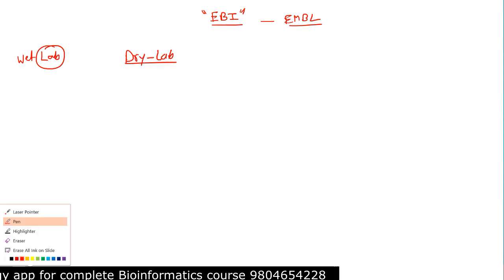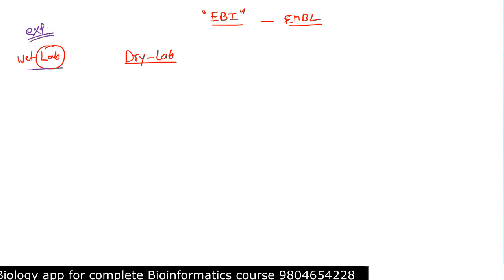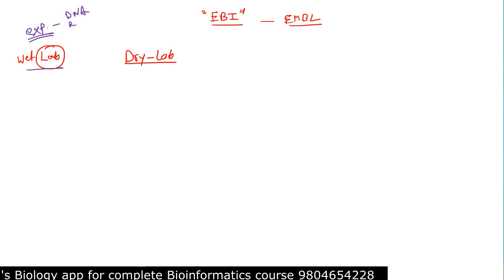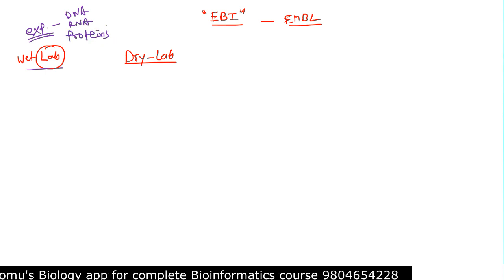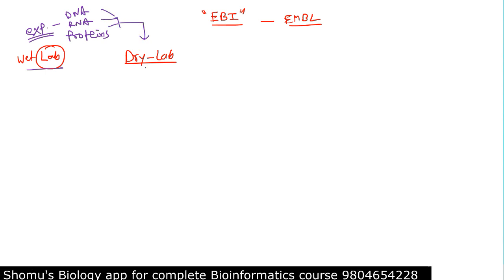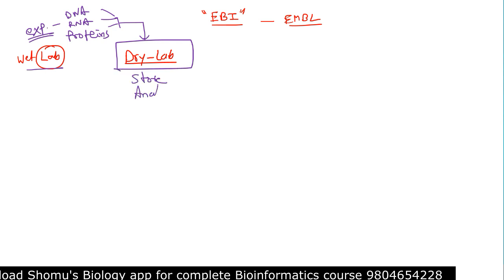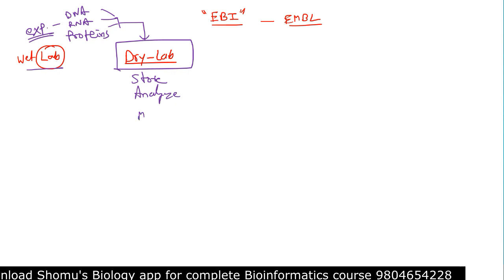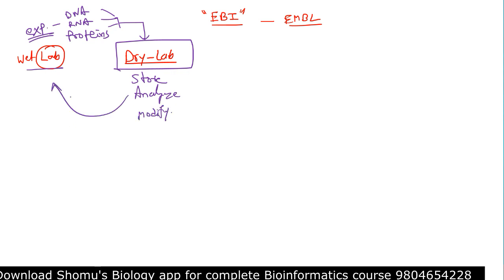What is the difference between wet lab and dry lab? In the wet lab, we run all the experiments — experiments on DNA, RNA, proteins, and all these things. All the data that we gather is then transferred to the dry lab, where we store the data, analyze it, and modify it.